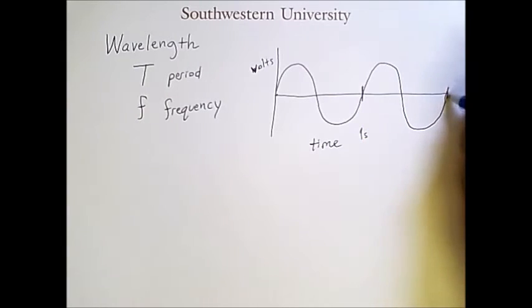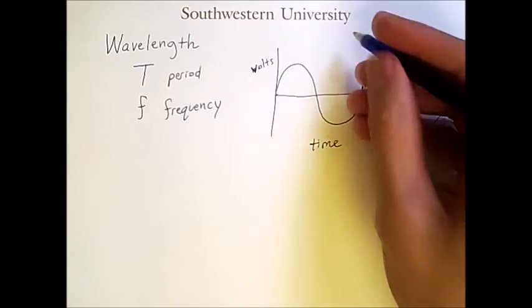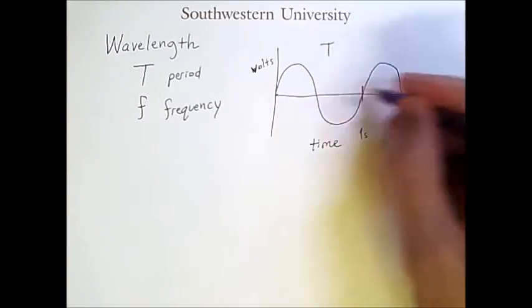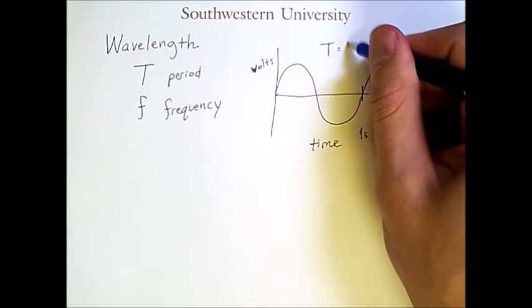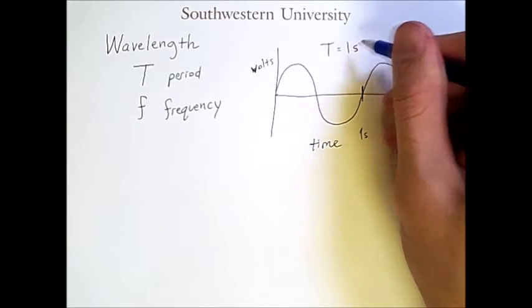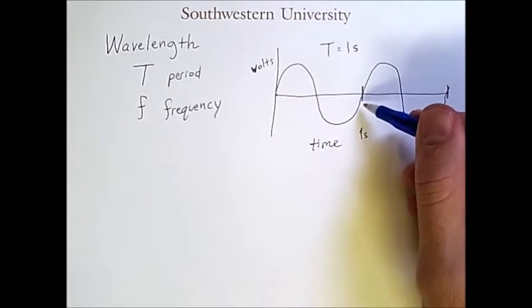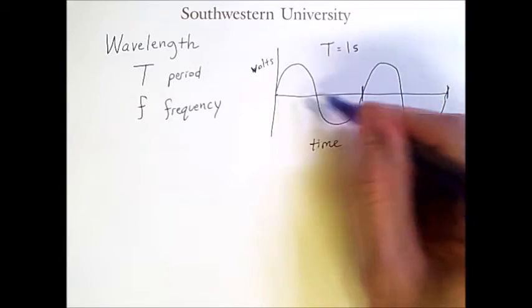and this time is two seconds, then the period T of this wave is one second, because I go up and back down and into the center in one second.